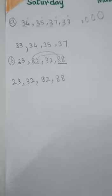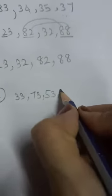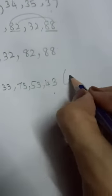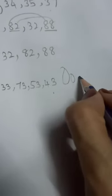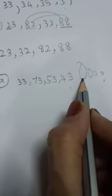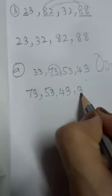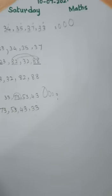Next, descending order or decreasing order. Let's arrange: 33, 73, 53, 43. We have to arrange them from bigger to smaller — that means descending or decreasing order. Write the biggest number first: 73, then 53, then 43, and the smallest number is 33. So the descending order is: 73, 53, 43, 33. This is the decreasing order.